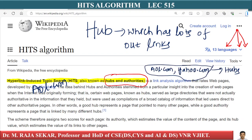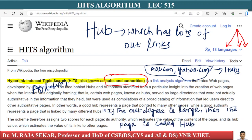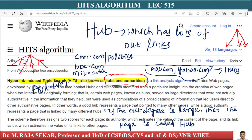If the out-degree is large, then the page is called a hub. The other type of page is called an authority. Typically you would see pages like CNN.com/politics, BBC.com, or pages like MIT.edu. These pages may not link to many other pages, but they get a lot of inlinks from many other websites like Yahoo.com, AOL.com, and many more internet sites. This site is called an authority. If you have lots of inlinks, or if your in-degree is large, it is called an authority.